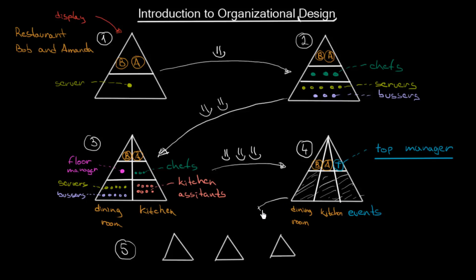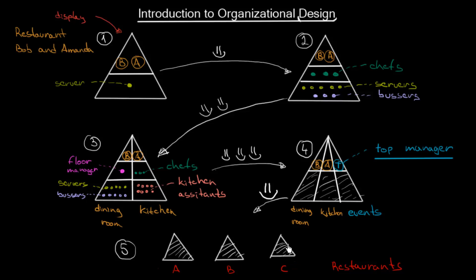We are growing even more into the last phase. We will have several restaurants: restaurant A, restaurant B, and restaurant C. We have realized we are very good at the one restaurant we have built so far, so we will create two more, using the same structure in all of them. Where are our founders Bob and Amanda? They are going to form what we call a headquarters — that is where Bob and Amanda will be. They are not going to be in daily contact with their restaurants; they are just going to oversee them.